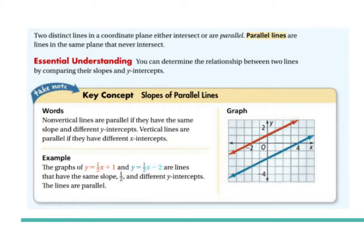You can determine the relationship between two lines by comparing their slopes and y-intercepts. The slopes of parallel lines: non-vertical lines are parallel if they have the same slope and different y-intercepts. Vertical lines are parallel if they have different x-intercepts, and horizontal lines are also parallel as long as they have different y-intercepts. For example, y equals one half x plus one and y equals one half x minus two have the same slope of one half and different y-intercepts — these lines are parallel.